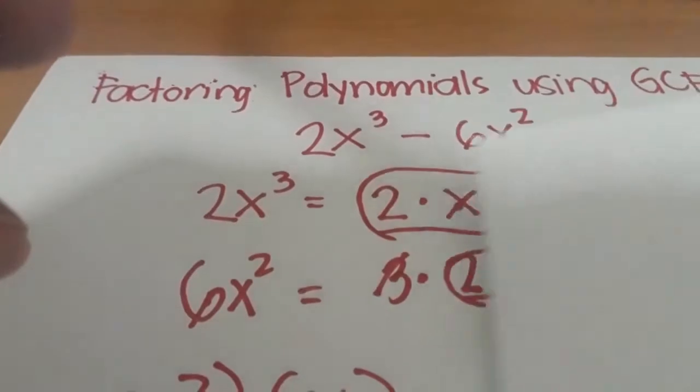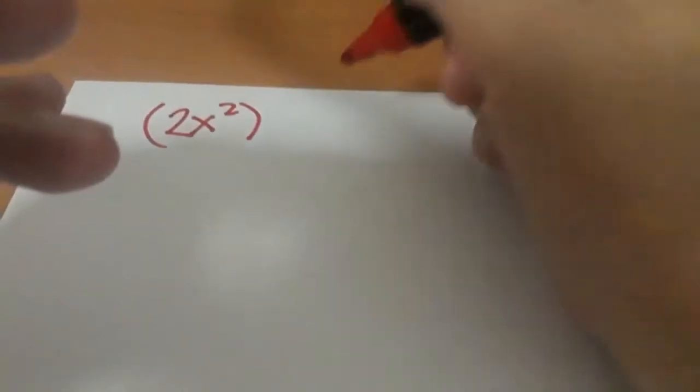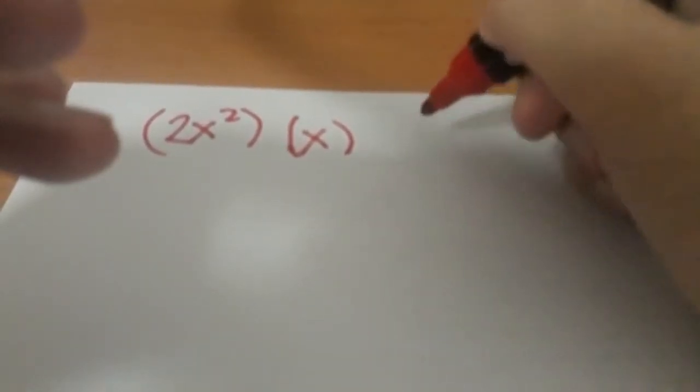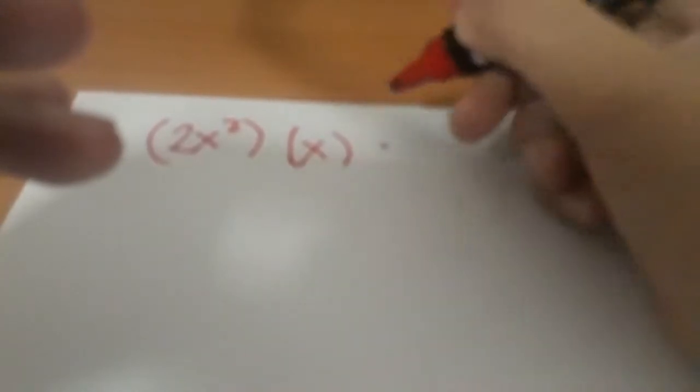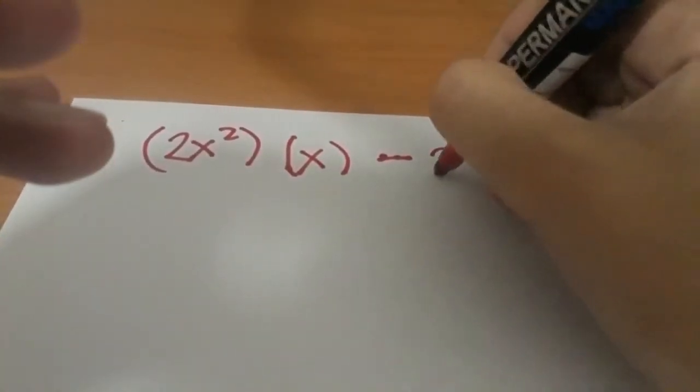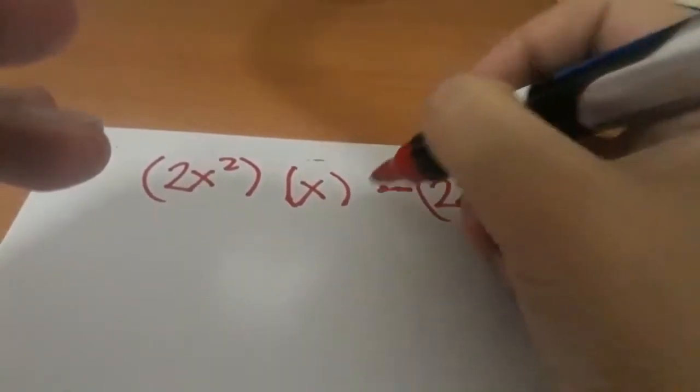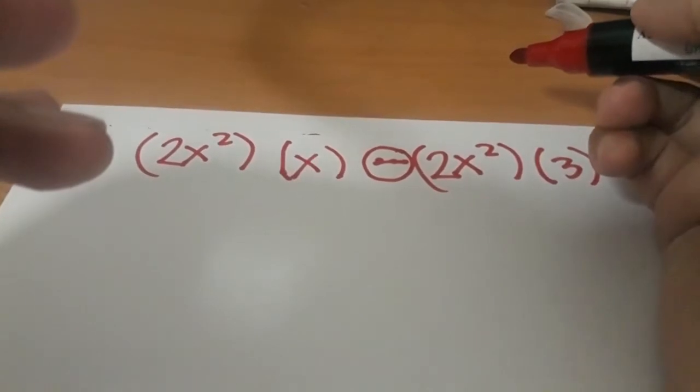And then our third step is we will be using the distributive property to factor out our polynomial. So let me just write down the factors again. That's 2x² times x, and 2x² times 3. So we are basically just replacing it. We're still going to use the same operation that was used in the original polynomial.